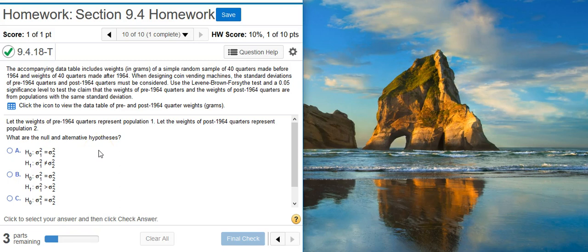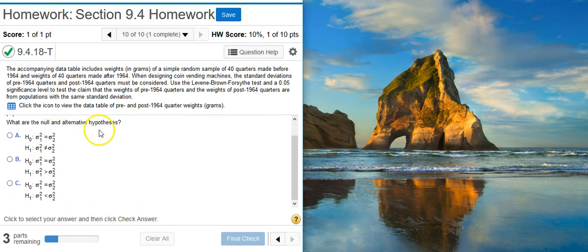This is pretty simple with the null and alternative hypotheses. The null is always a statement of equality, and we see that among our three options here, we have that same null hypothesis for each answer option.